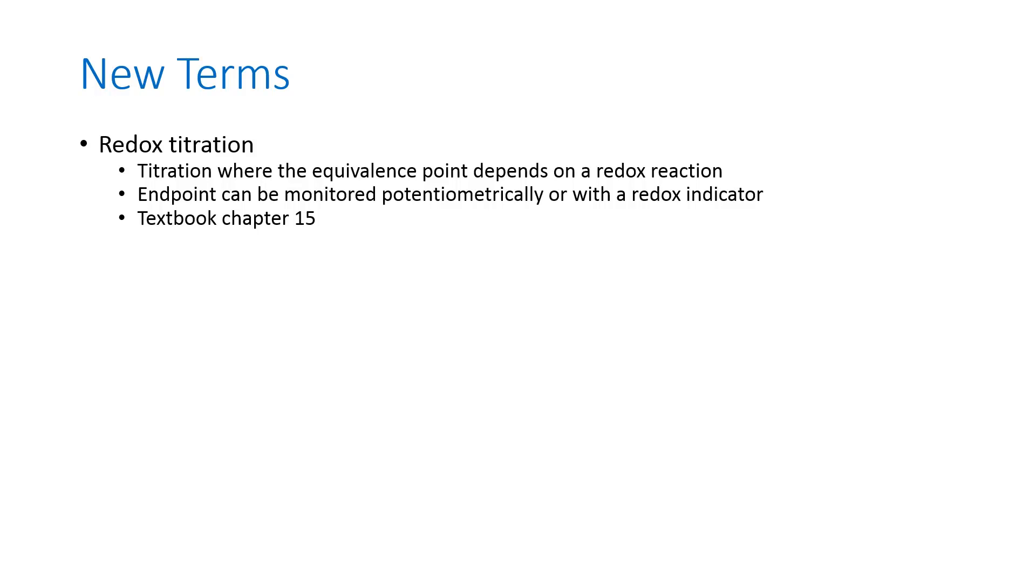In those two experiments, we used an indicator. For a redox titration, you can also use an indicator. But here, there's also the potential to use the current that's produced by this redox reaction to monitor for the endpoint potentiometrically. We are going to use a redox indicator in this case, but there's another way that you could do it. Your textbook deals with this topic of redox titrations in Chapter 15.